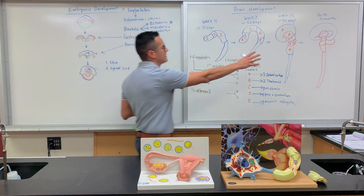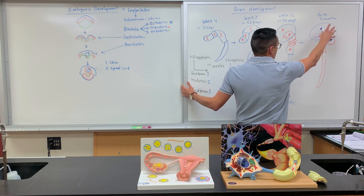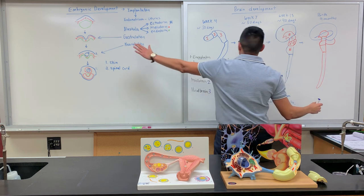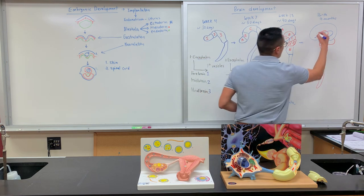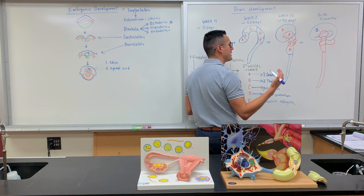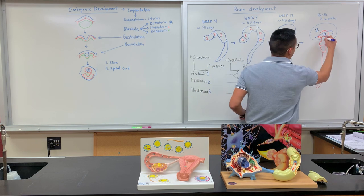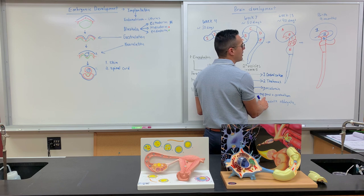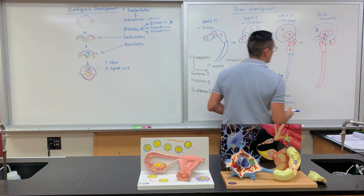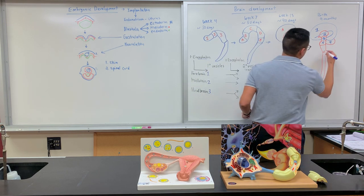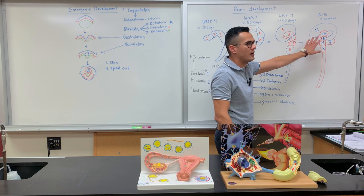Let's go to the board and point out some of the basic regions of the brain. This is our fully developed brain and spinal cord. Number one is the cerebral cortex. Number two is the thalamus. Number three is the midbrain. We have the pons and the cerebellum — this is the pons, this is the cerebellum. And then number five is the medulla oblongata. This part represents the spinal cord. So this is our fully developed brain.